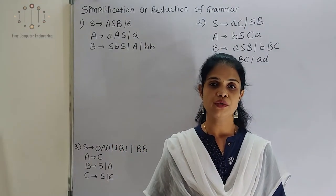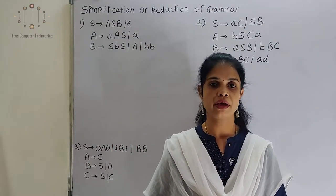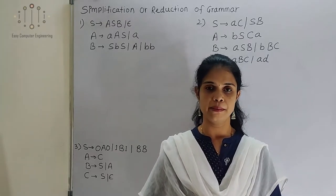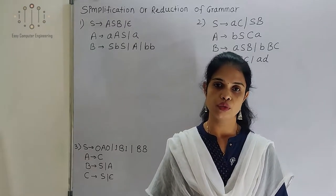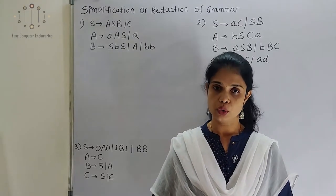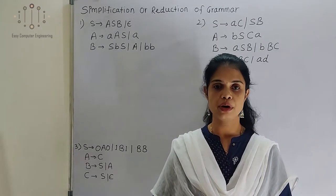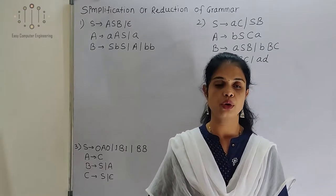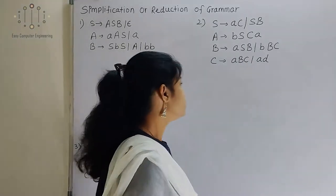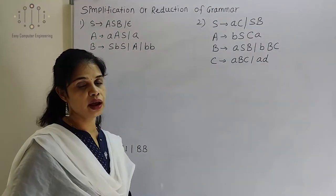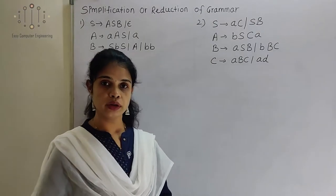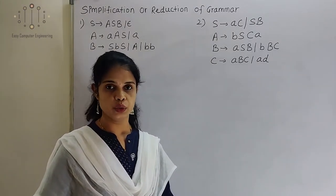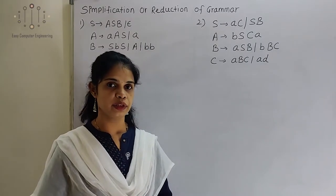Hello friends. In this video we will see how to simplify grammar or reduce grammar. Here we have taken three examples. In previous videos we already covered how to remove useless symbols, the epsilon productions and the unit production. So these three concepts we are going to use in this example. To simplify the grammar, we have to remove non-reachable, non-generating, epsilon production and the unit production.